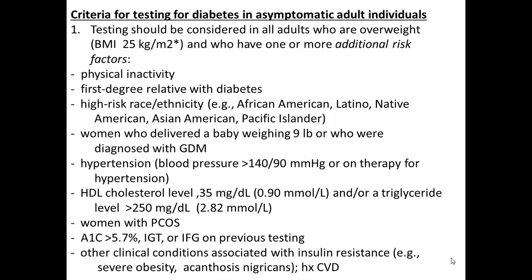As many as 25% of Americans with type 2 diabetes are undiagnosed. The vascular damage will continue unchecked, resulting in irreversible kidney damage, vision problems, wounds that won't heal, and neuropathies — often far into the disease well before it's ever diagnosed.